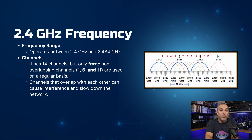The frequency range for 2.4 gigahertz is between 2.4 gigahertz and 2.484 gigahertz. It offers 14 channels, yet only three of them are non-overlapping — channels 1, 6, and 11 — which are the ones most commonly used.